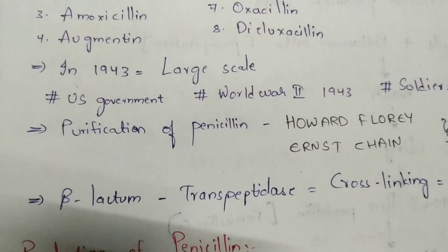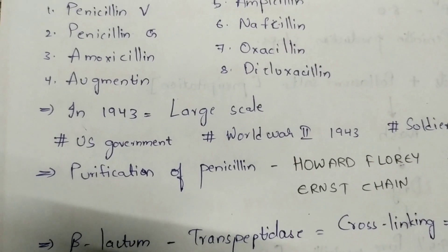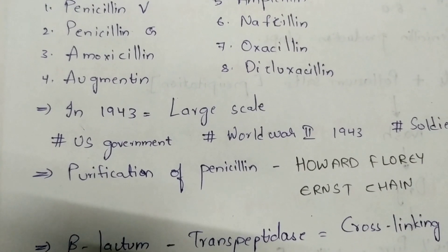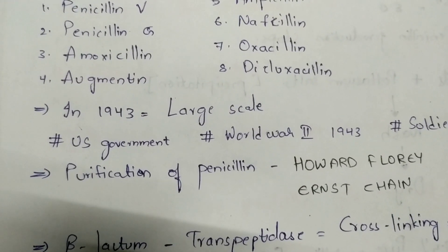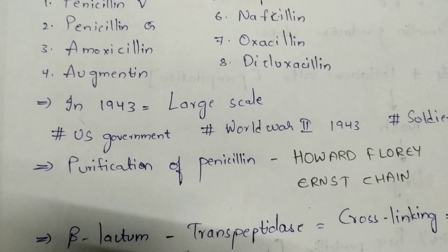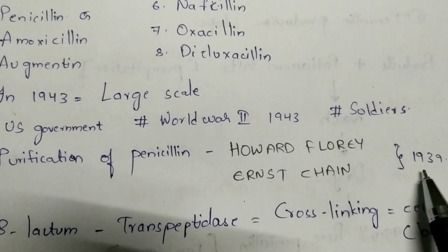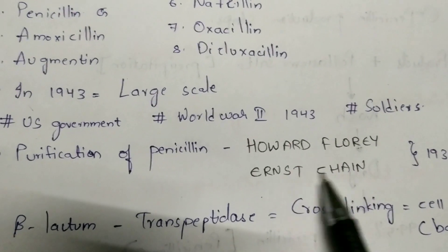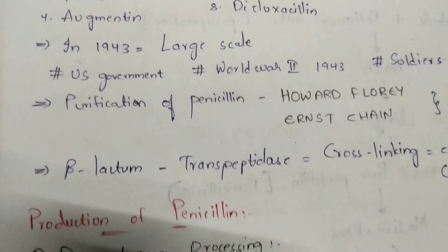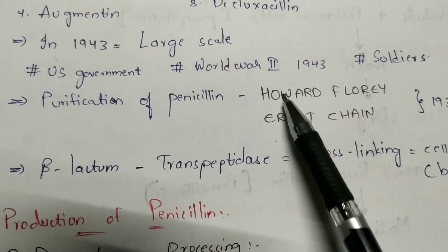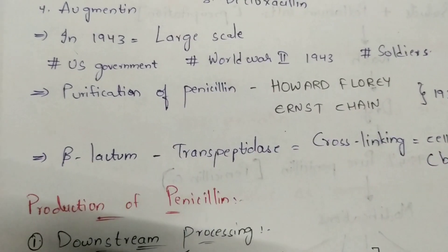Alexander Fleming discovered penicillin in 1928, but he discovered it in impure form — it was not in pure form. The purification of penicillin was achieved by Howard Florey and Ernst Chain in 1939. These two scientists are very important to remember.